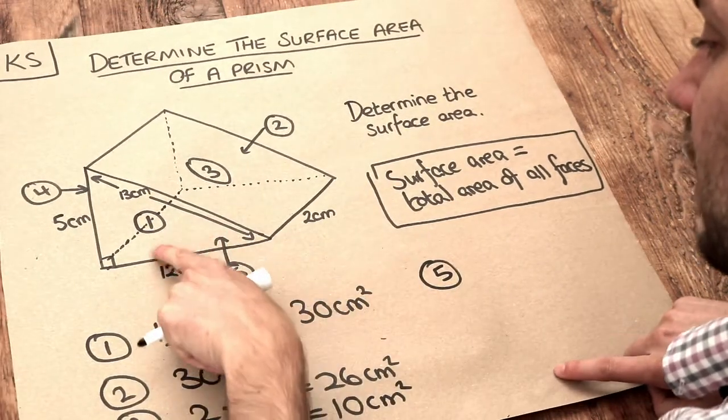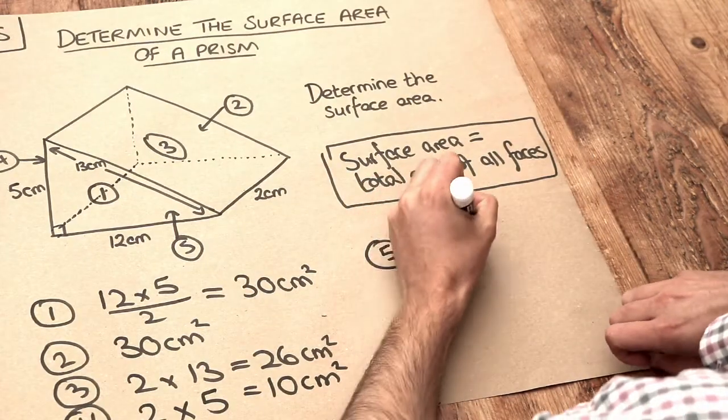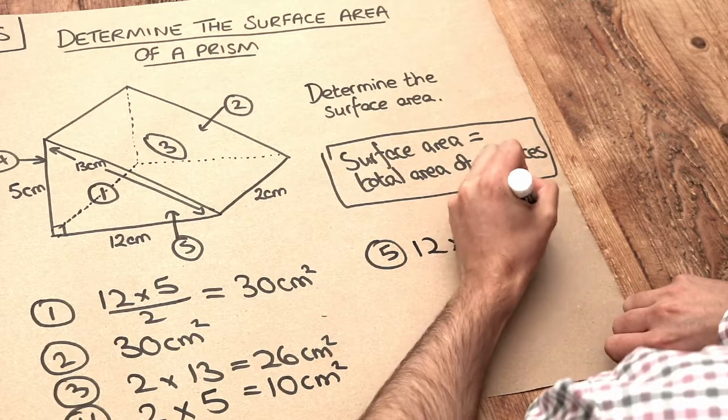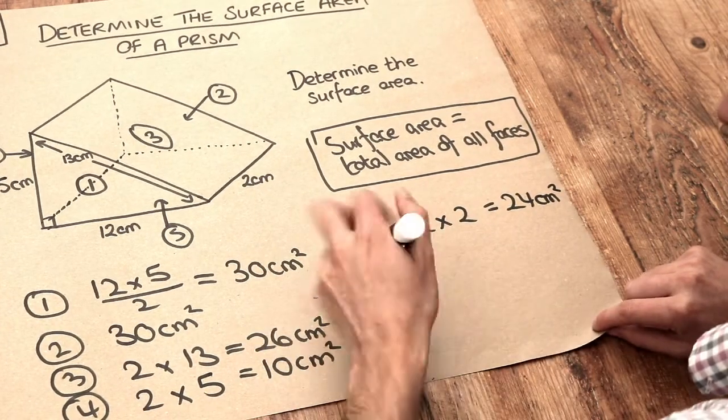And then finally we've got face number five, that's the bottom. Well this is a rectangle again which is 12 by 2, so we're going to do 12 times 2 and that equals 24 centimeters squared.